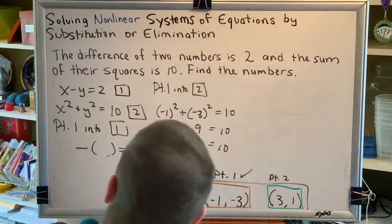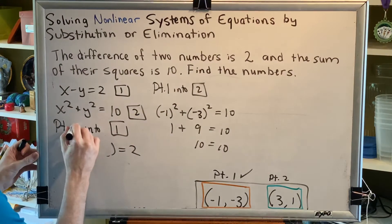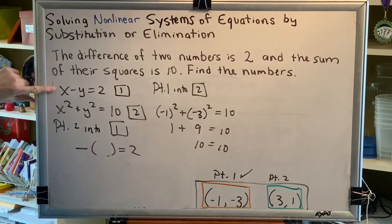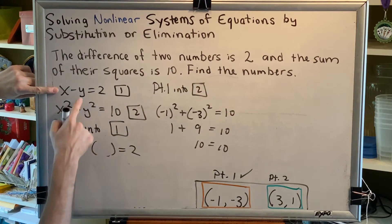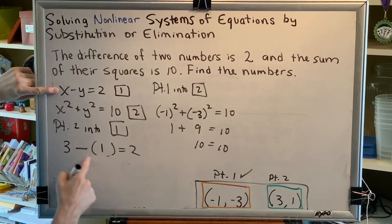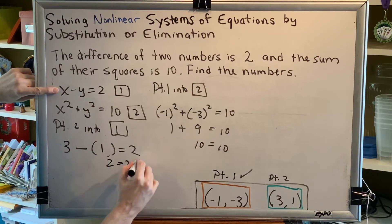Let's do point 2 in equation 1. So in equation 1, replace x with 3, replace y with 1. 3 minus 1 equals 2. 2 equals 2, and that checks.